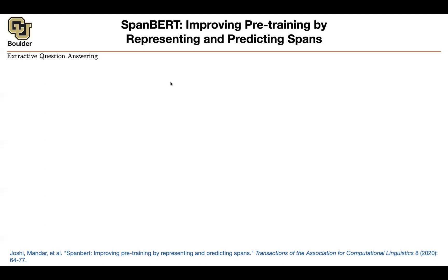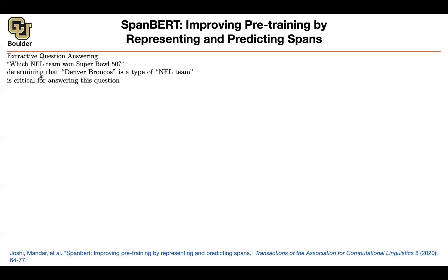Why would you do that? For many downstream tasks, BERT is good enough and going to do a great job, but for some other tasks it's not going to do as well and there is room for improvement. One of them is extractive question answering. The intuition: if the question is 'Which NFL team won Super Bowl 50?', your question answering algorithm needs to look at 'Denver Broncos' in a text and identify that it's a type of NFL team.